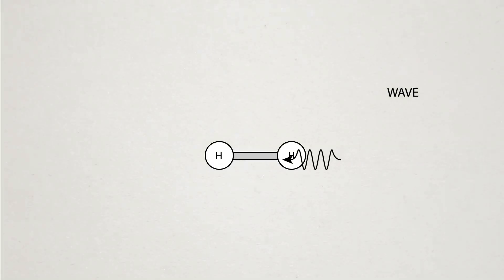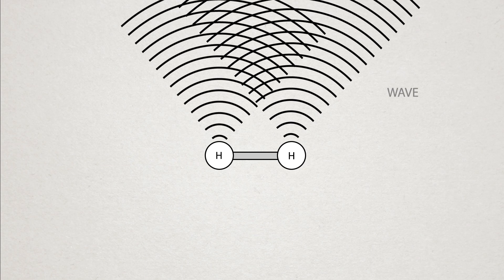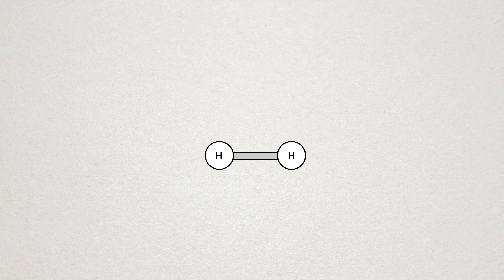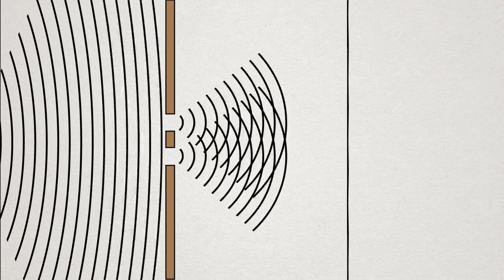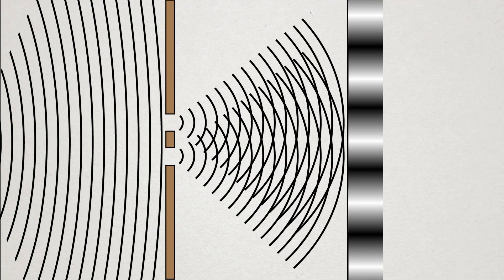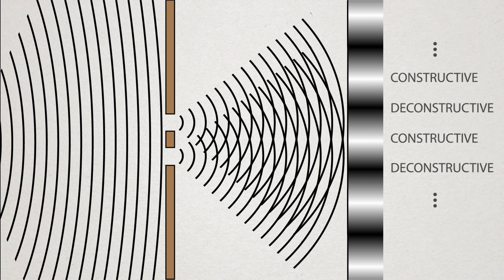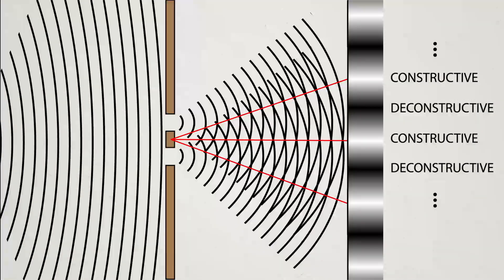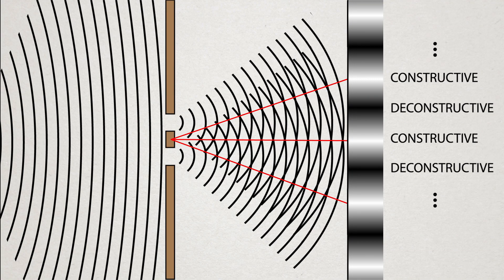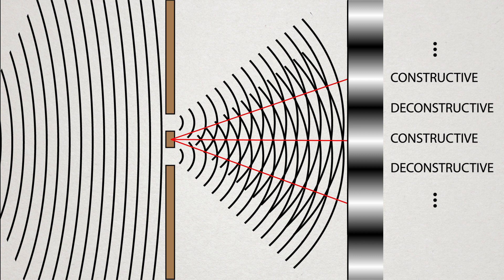You may be familiar with Young's double slit experiment that showed that light does act as waves. Young achieved this by shining light through two slits and showing that there was an interference pattern that could be observed, which is only possible if the light was acting as a wave and not a particle. This same experiment works with electrons and larger atoms.